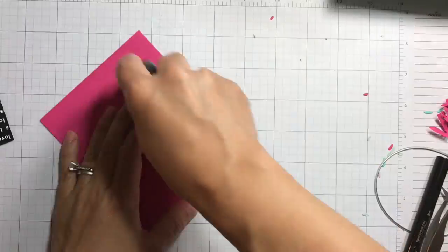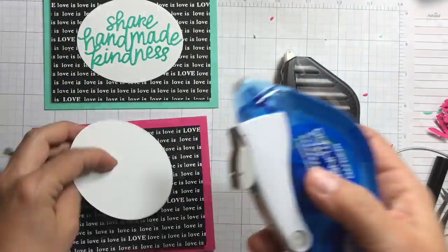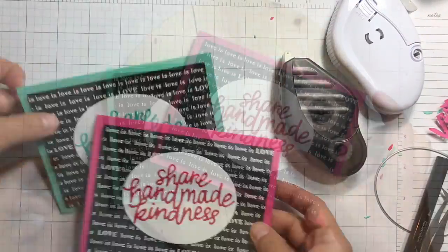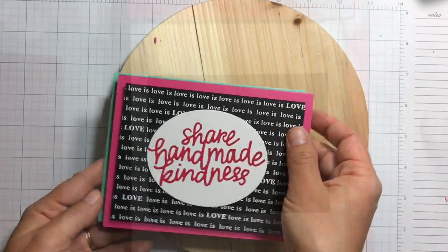I'm adhering it onto my card bases, and on top of it I'll just adhere the oval with the sentiments and we're done. So after I made those two I decided to go back again and make one more. They're kind of addictive.